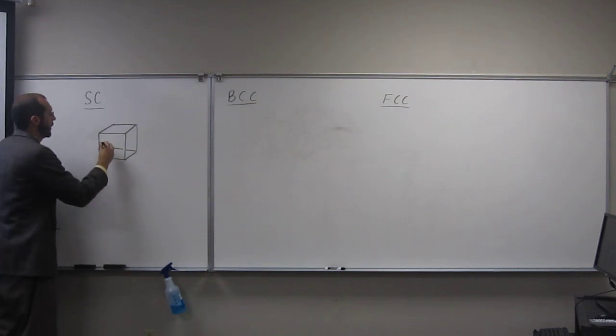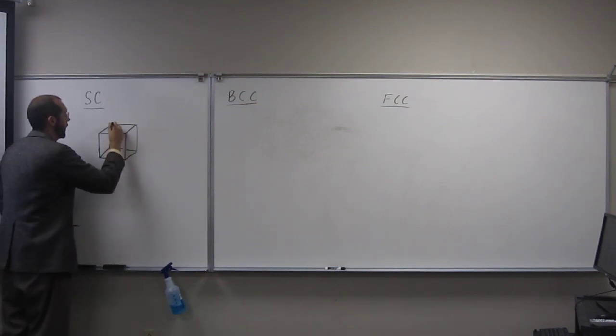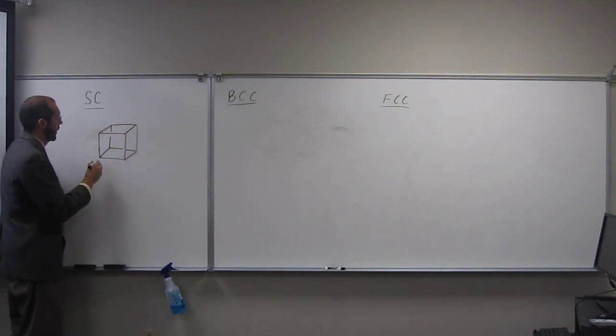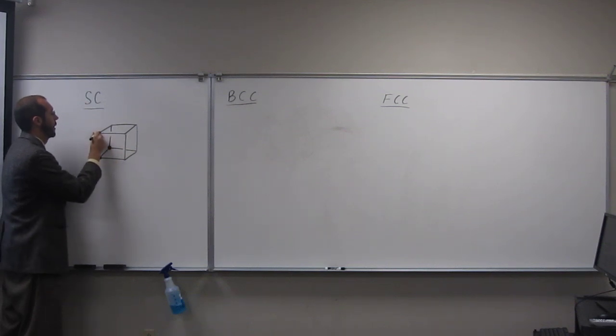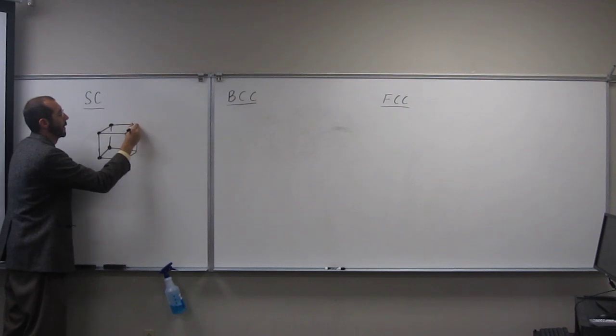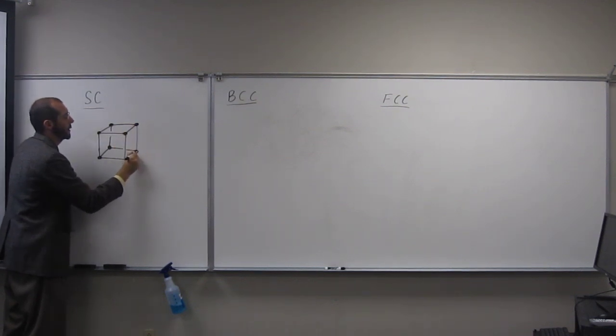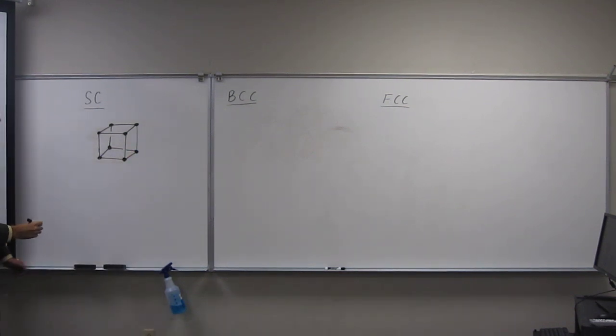Okay, so a simple cubic is going to look something like this, with atoms at each one of the corners of the cube there. So hopefully you guys can see that I've made eight dots.